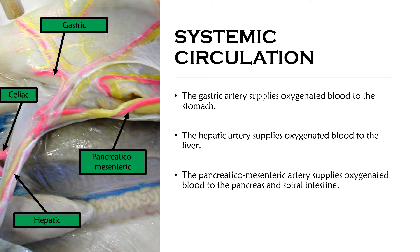The pancreaticomesentric artery supplies oxygenated blood to the pancreas and the shark's spiral valve intestine. A general rule of thumb: if mesenteric is in the name, odds are it's supplying the intestine with oxygenated blood. However, there are exceptions — it's just a when-in-doubt scenario.